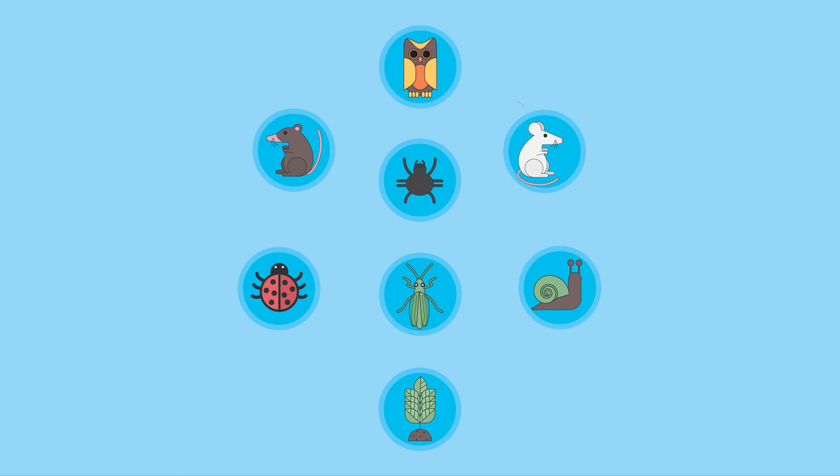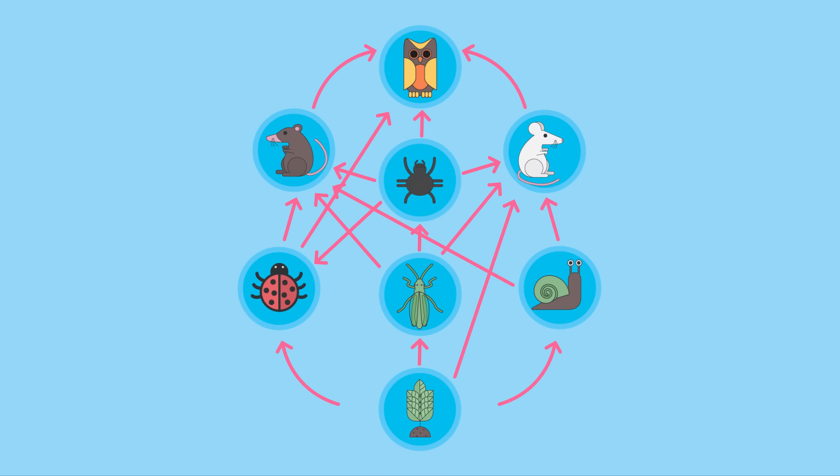So let's take the food web of a woodland environment as an example. This food web is the combination of 11 different food chains so we can start to see how the species are interdependent on one another.